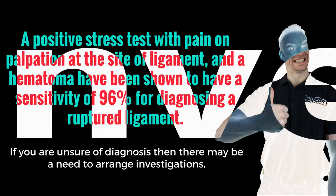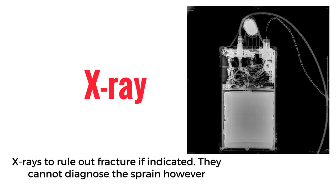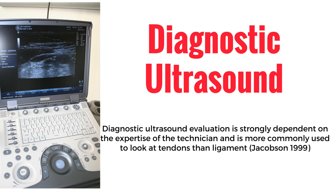If you are unsure of the diagnosis, you may need to arrange further investigations. Investigations commonly used include x-rays to rule out fracture if indicated — though you cannot diagnose the sprain directly with this. Diagnostic ultrasound evaluation is strongly dependent on the expertise of the technician and is more commonly used to look at tendons than ligaments, according to Jacobson 1999.